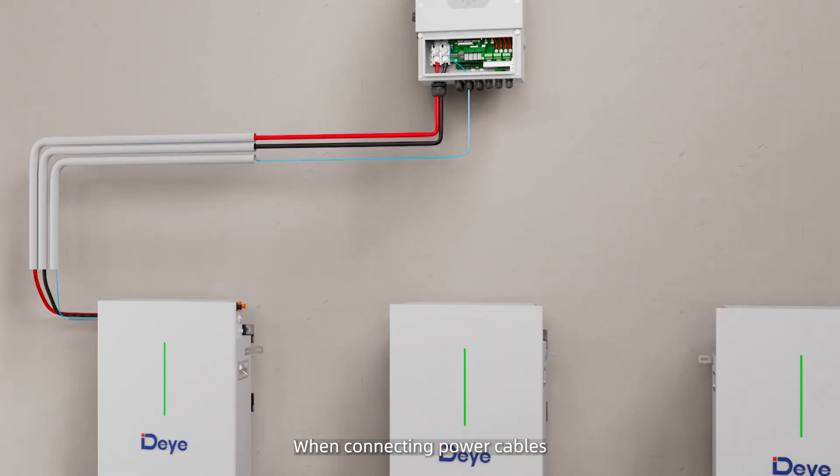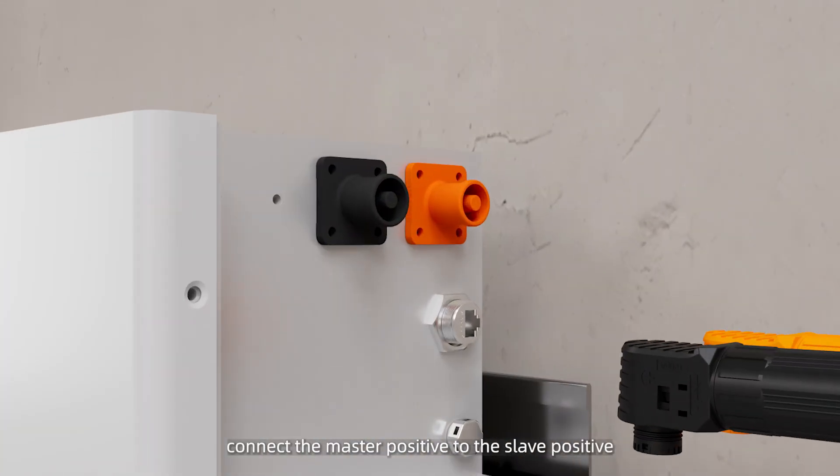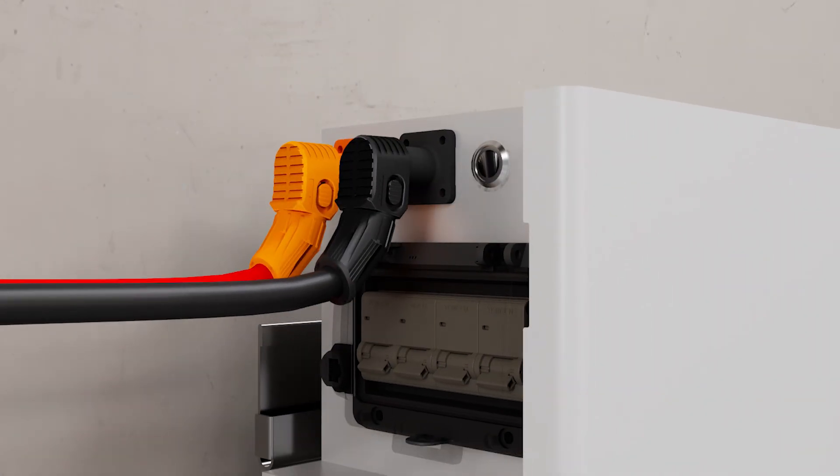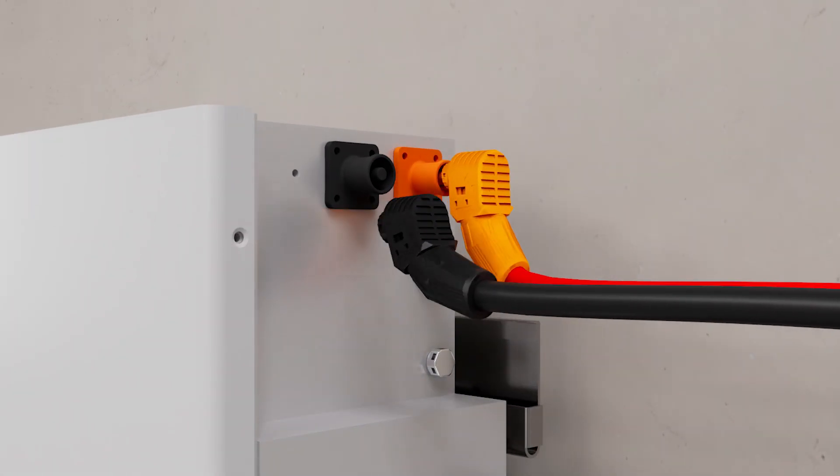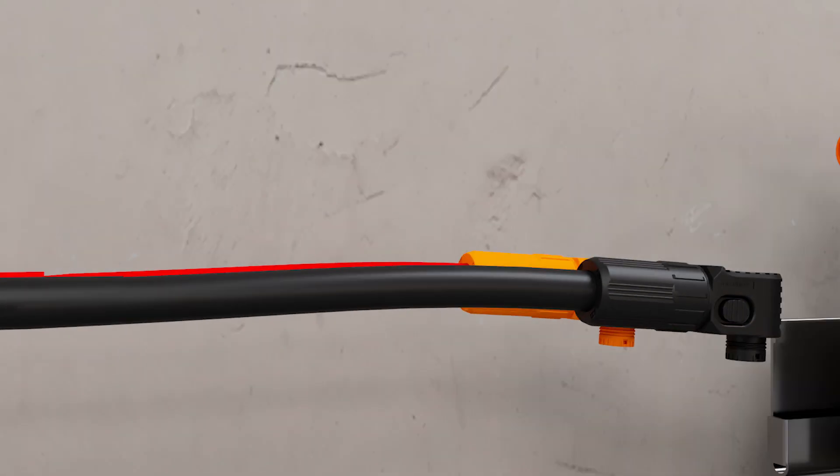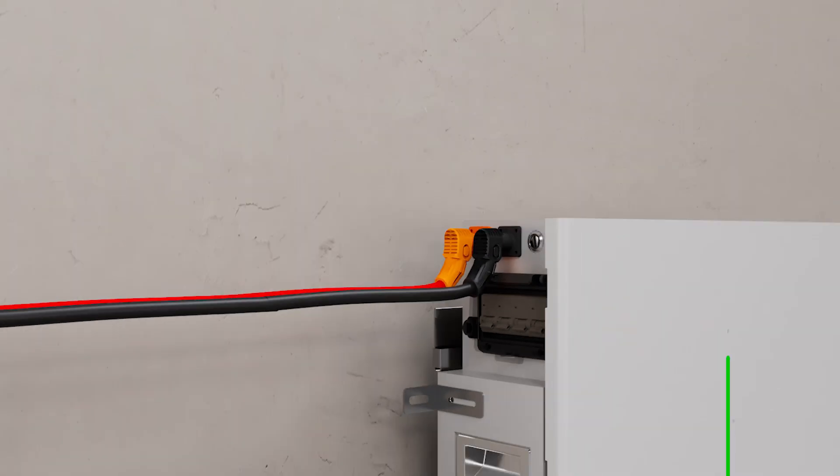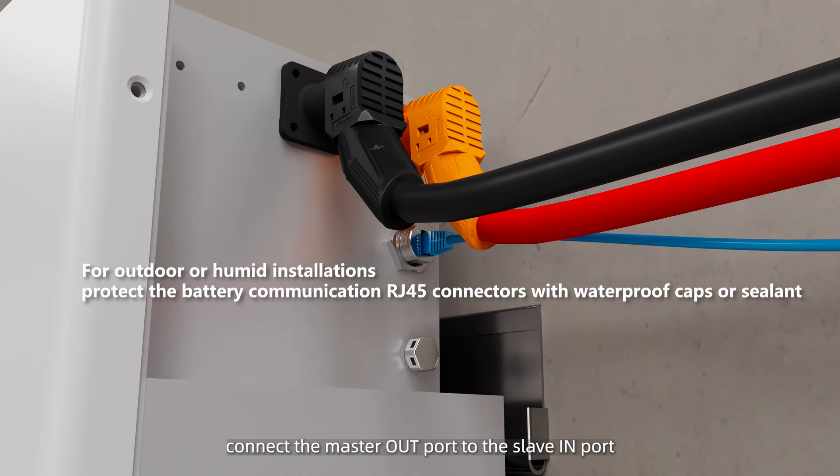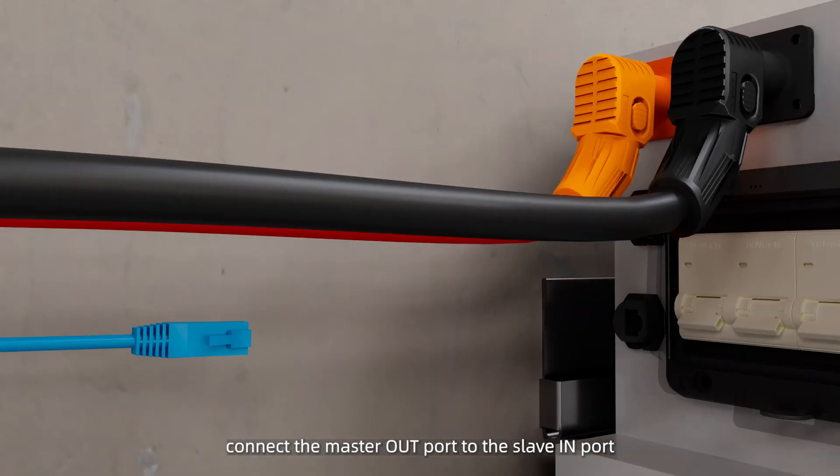When connecting power cables, connect the master positive to the slave positive and the master negative to the slave negative. When connecting communication cables, connect the master out port to the slave in port.